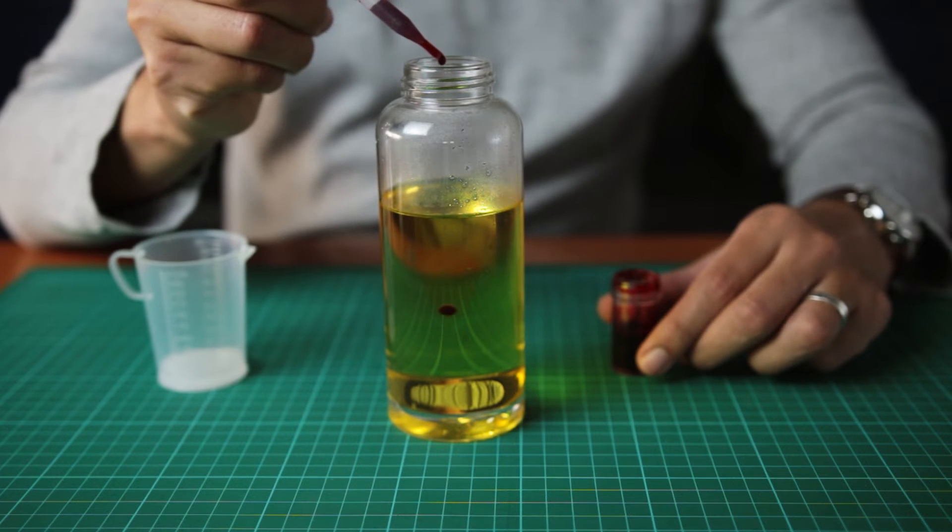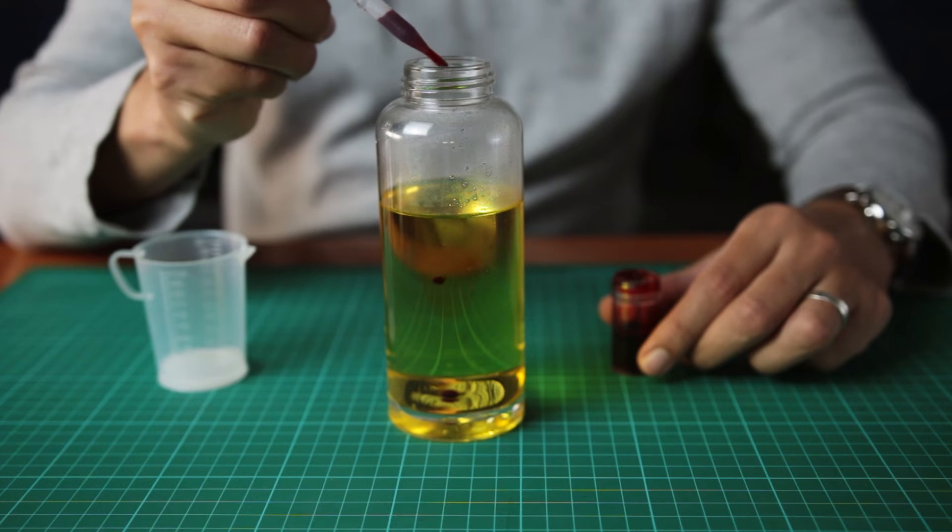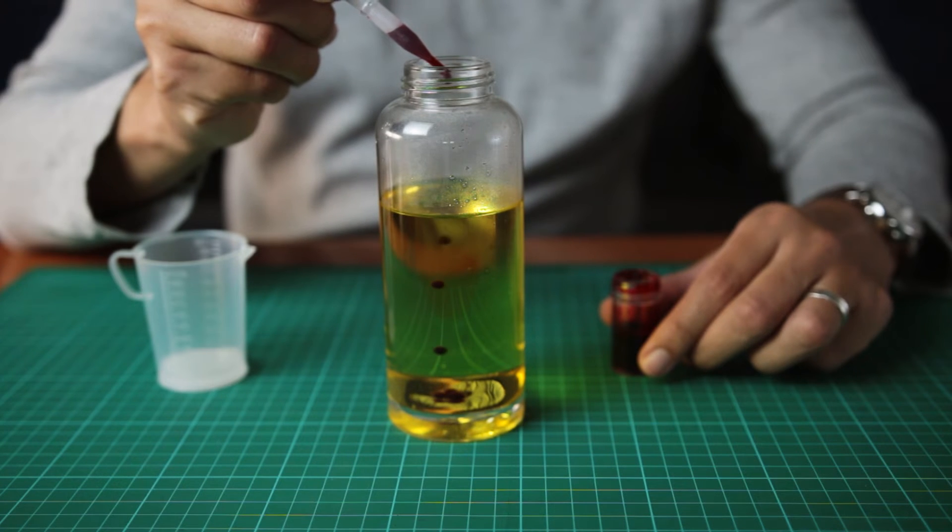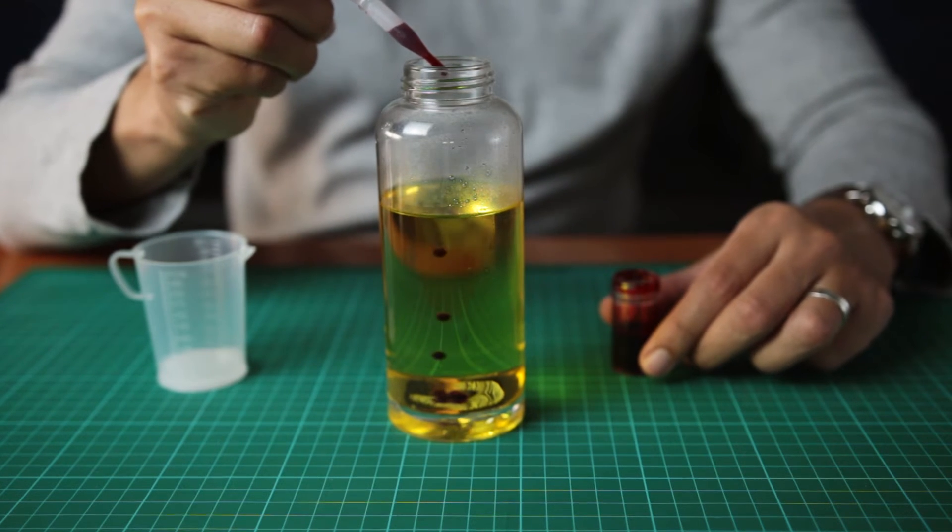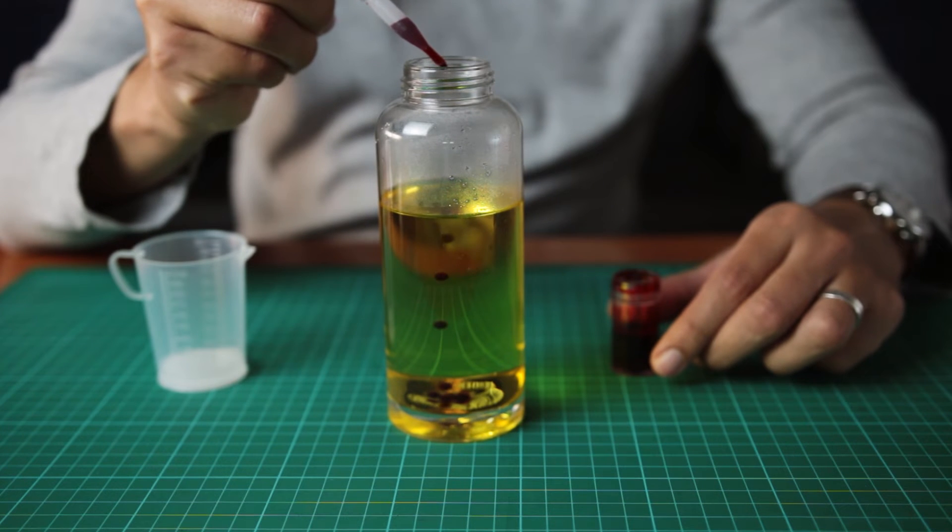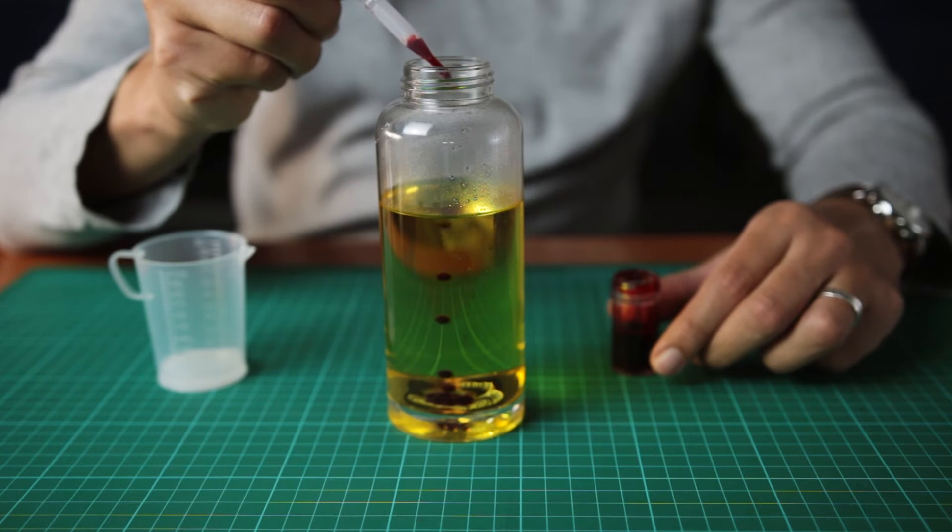Notice what happens to the drops of coloring. Why do you think this is happening? The food coloring is denser than the oil and sinks to the bottom. But it's less dense than the vinegar.